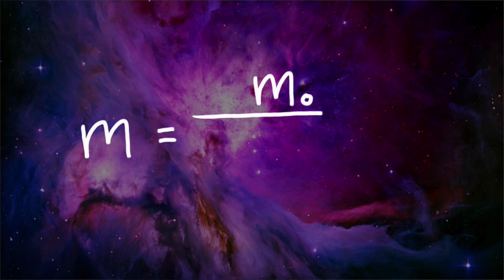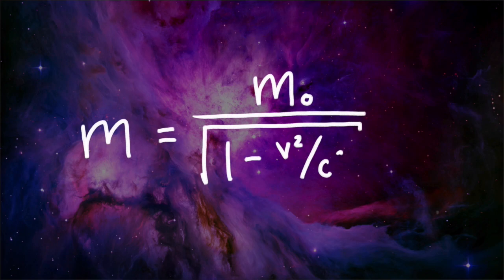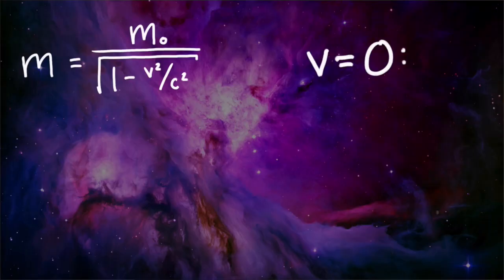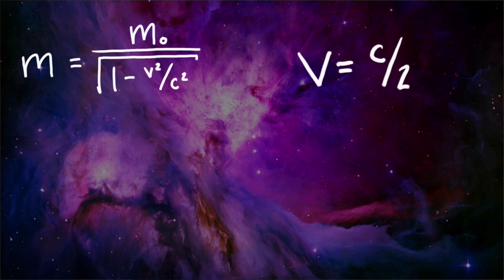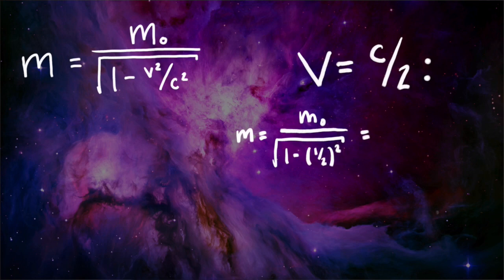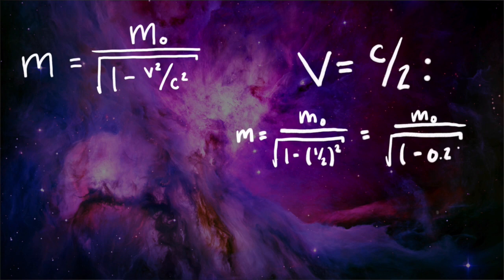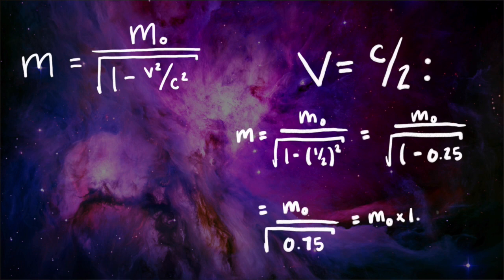Kinetic energy is determined by resting mass and speed, and special relativity actually has an equation for relativistic mass: mass equals resting mass divided by the square root of 1 minus velocity squared over the speed of light squared. At rest, or v equals 0, the mass is just the resting mass divided by 1, or the resting mass. At half the speed of light, the mass equals resting mass divided by the square root of 1 minus one-half squared, which is resting mass divided by the square root of 0.75, or mass equals resting mass times 1.155.